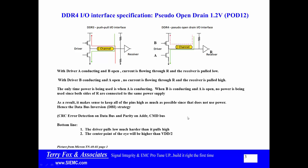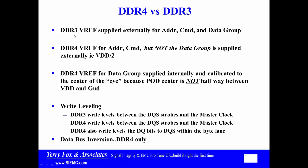You can read through this and also refer to Micron AppNote TN40-03, page 3. DDR3 VREF is supplied externally for address, command, and the data group. DDR4 VREF for address and command is also supplied externally, but VREF for the data group is supplied internally. It is calibrated to the center of the eye because the partially open drain eye center is not halfway between VDD and ground — it's about 70% of the way to VDD — and DDR4 calibrates to the exact center of that eye.